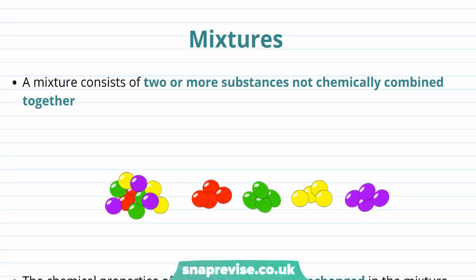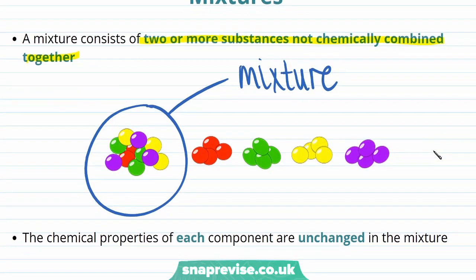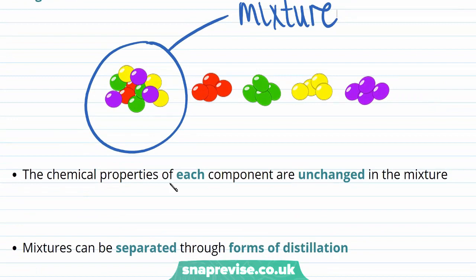If you've seen our video on pure substances, you'll know that chemists use the word mixture to describe two or more substances not chemically combined together. For example, if we have four different colours of beads, in a mixture we can still identify each colour, and the essential qualities of each bead remain unchanged. The equivalent in chemistry is the chemical properties of each component, which are unchanged in the mixture. As a result, mixtures can be separated by physical processes — those that don't involve a chemical reaction.